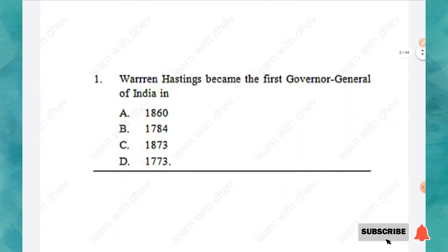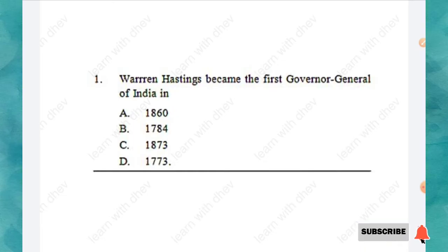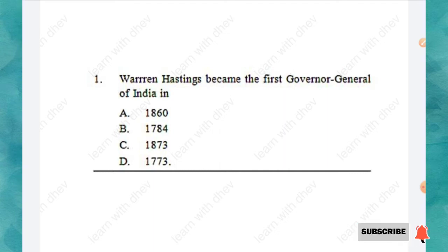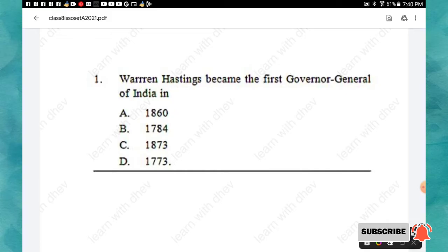The first section is History, in which you will have 20 questions, each carrying one mark. Question 1: Warren Hastings became the first Governor General of India in — 1860, 1784, 1873, or 1773? The right answer is option D: 1773.